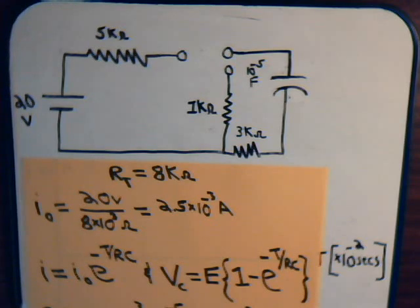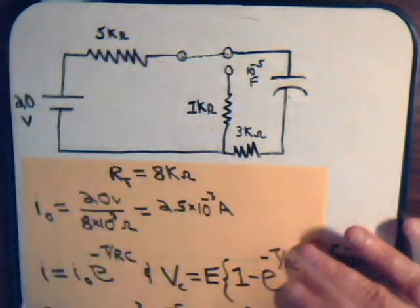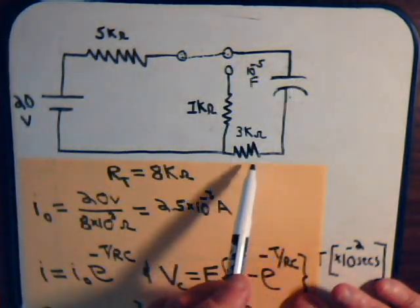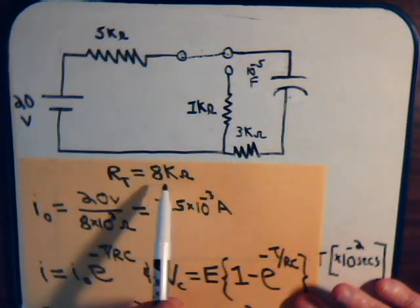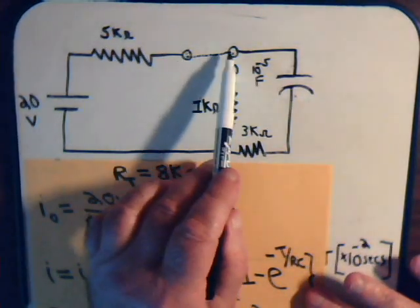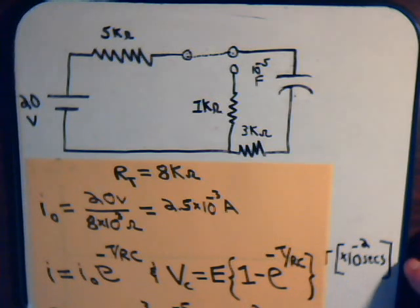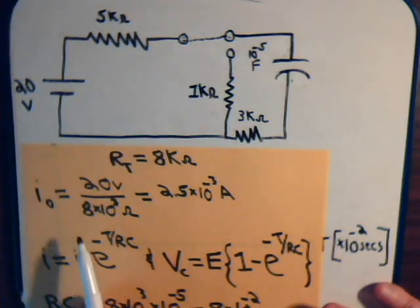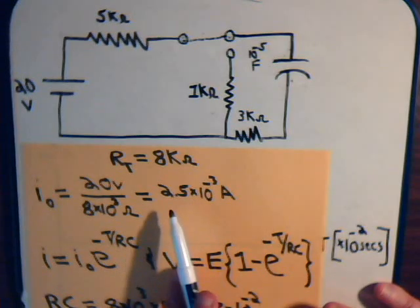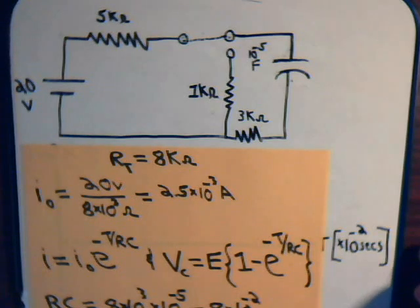Initially, we make a connection so that we have a complete circuit. This circuit has a total resistance of 8 kilo-ohms and the battery is 20 volts, so when we initially make this connection there's going to be a current flow equal to the voltage divided by the total resistance: 20 volts divided by 8,000 ohms gives us an initial current of 2.5 milliamps.